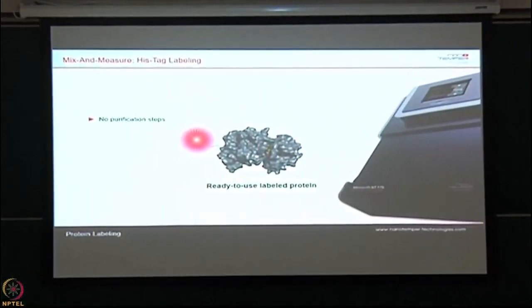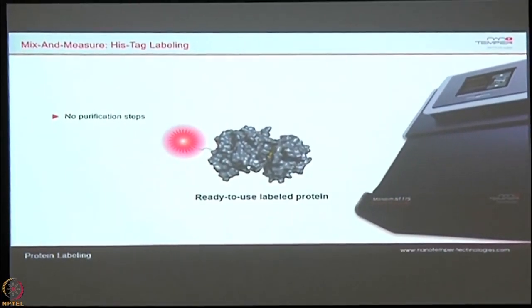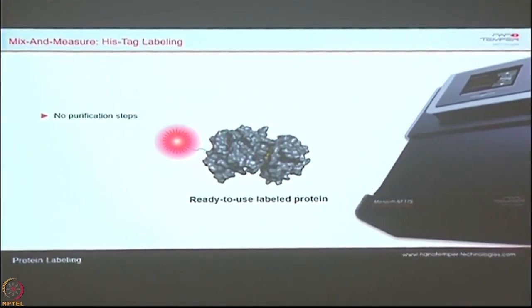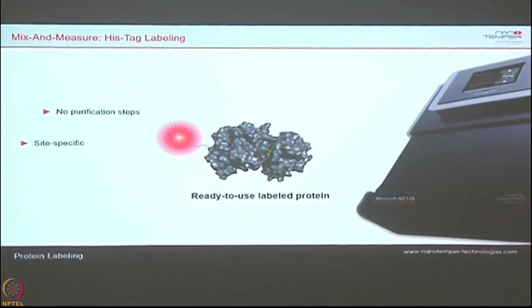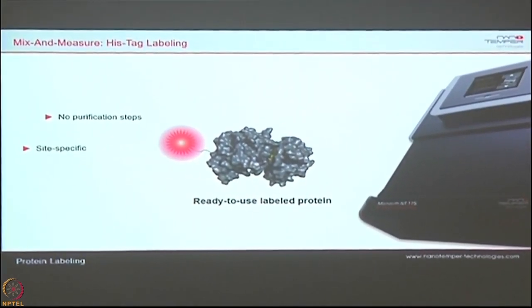We recently came up with a kit where you can label your His-tag. At the 6-histidine position you can label your protein. The biggest advantage is you need not purify your protein — if your protein is in the cell lysate and it is already His-tagged, simply add the dye and do the dilutions. Even in cell lysates, specific interaction studies can be successfully done.